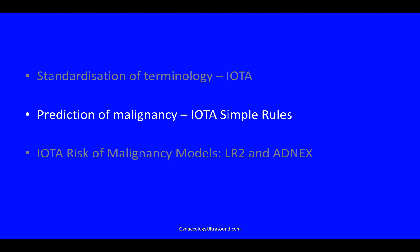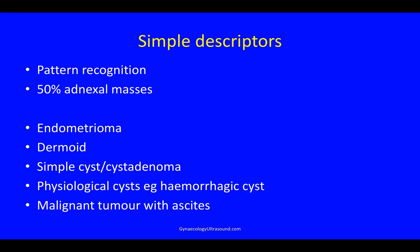Now I'd like to talk about IOTA simple rules. Firstly, we need to talk about simple descriptors. This is basically pattern recognition, and at least half of all adnexal masses will fit one of these descriptions. These masses are endometrioma, a dermoid, simple cyst or cyst adenoma, physiological cysts like a hemorrhagic cyst, or a malignant tumour with ascites. If you see those, you know what it is — you don't need any further risk models to help you predict the risk of malignancy.